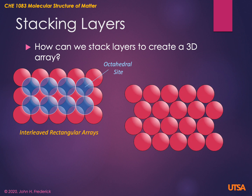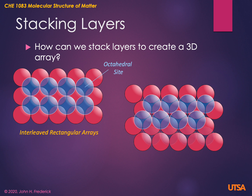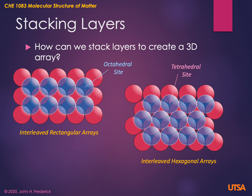Now, if we consider the hexagonal two-dimensional array, again we're going to put the next layer above holes in the first layer — a place where they can naturally sit — resulting in a closest packing arrangement of interleaved hexagonal arrays. One of the holes in the original layer forms a tetrahedral site: it's surrounded by three atoms at the bottom and one atom on top, forming a little tetrahedron, which is a fundamentally different shape than the octahedral sites we saw in the rectangular array. We also have octahedral sites in this arrangement: some gaps in the original layer that are not covered by spheres in the upper layer are surrounded by six equally spaced atoms, forming a smaller octahedral hole than the one found in the rectangular array.